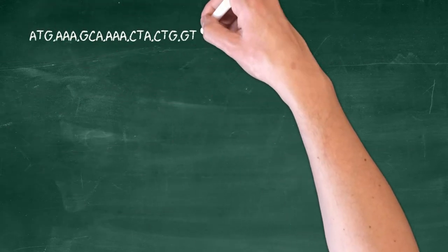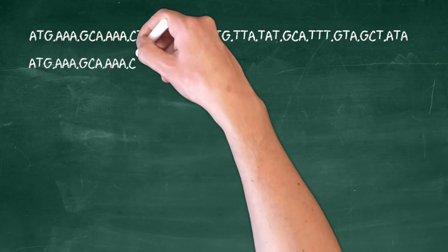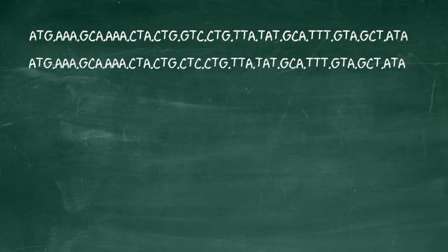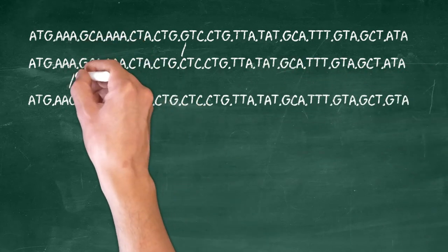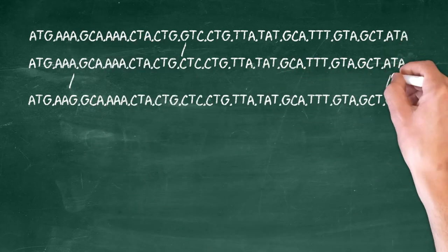I now have a transversion which converts G to C at position 19. Two more transitions, one at position 6 that moves the A to a G, and another A to G at position 43.